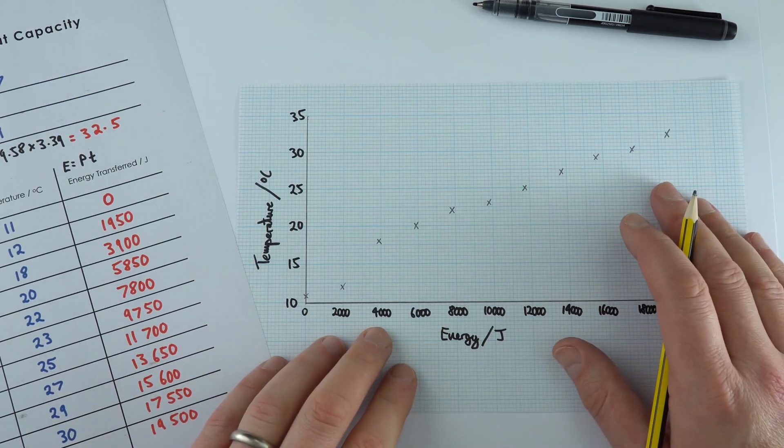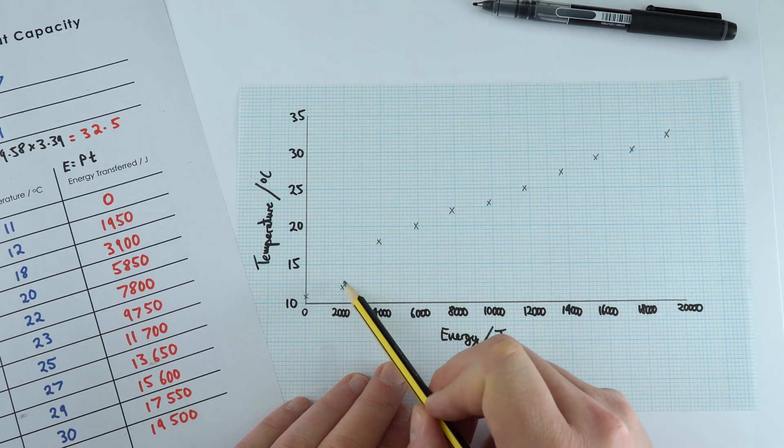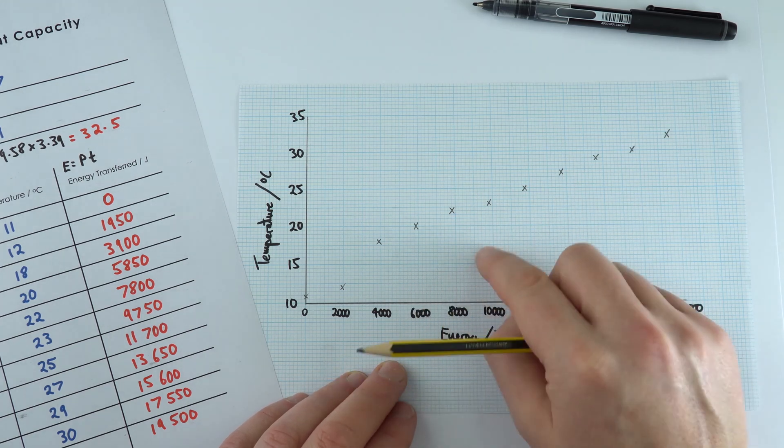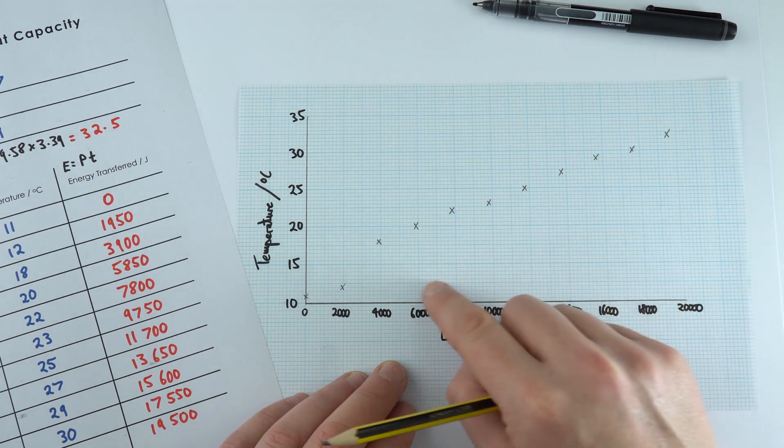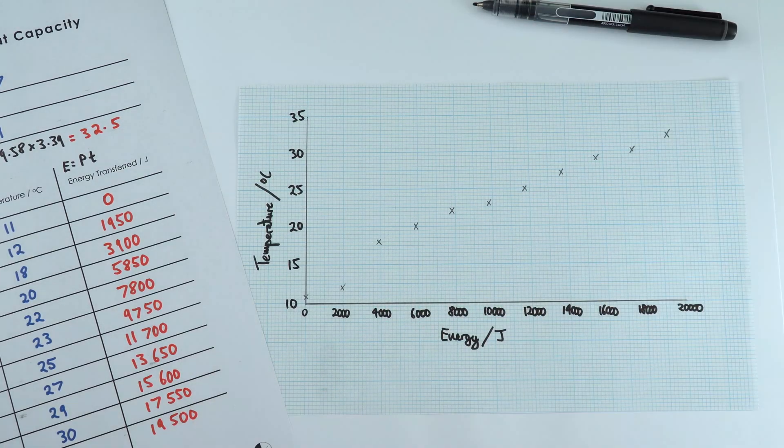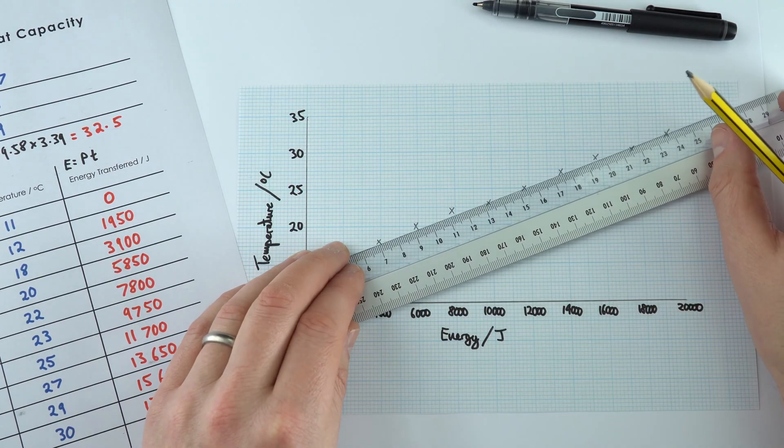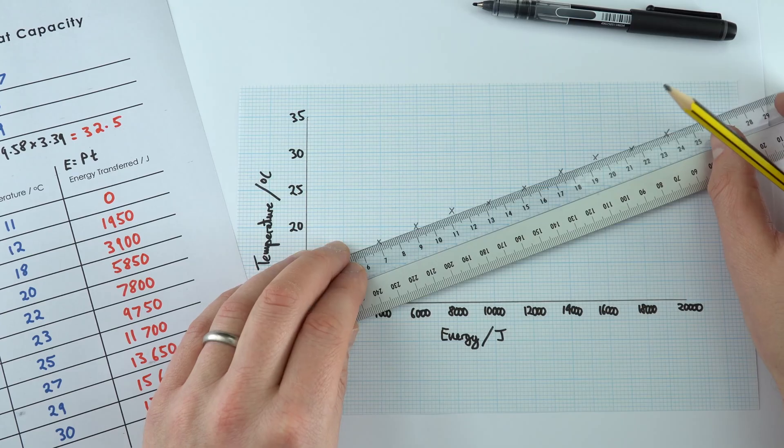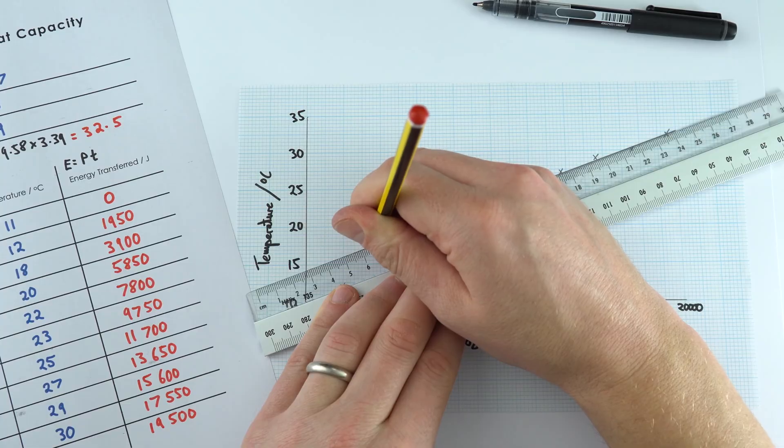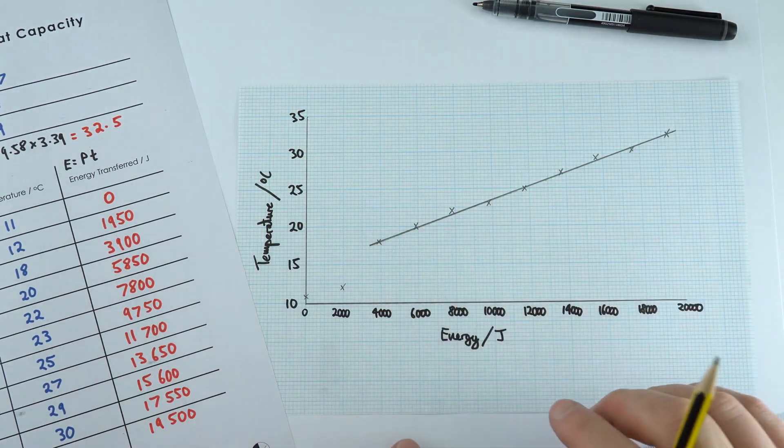So this is the data that we took. There seemed to be definitely a bit of a jump here when we went from 12 degrees up to about 18. I suppose that might be due to the mixing of the water and how evenly that water is actually being mixed. Looking at this data, probably the best line of best fit is going to be something like this. I think that here we have a good set of data, so I'm going to use this line to work out the gradient.